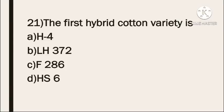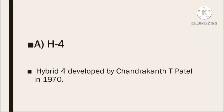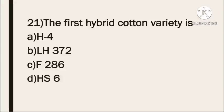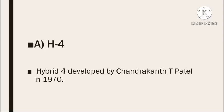Next question: the first hybrid cotton variety is — Option A: H4. Option B: LH 372. Option C: F 286. Option D: HS6. The correct answer is H4 — Hybrid 4 was the first hybrid cotton variety, developed by scientist Chandraganth in 1970.